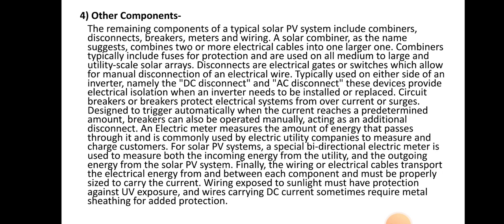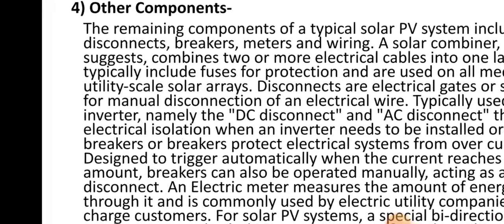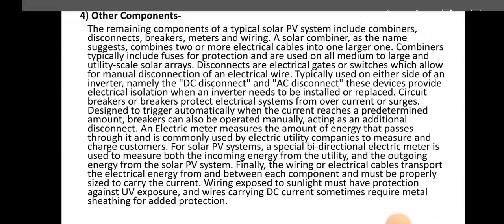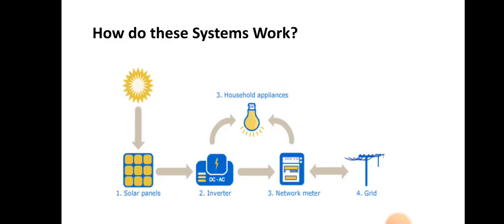Other components are also part of the photovoltaic system, including batteries. As shown in the figure, the extra components include: solar panel, inverter, network meter, electric meter, grid, distribution lines, batteries, and safety switches. All these components work together for the efficient operation of the photovoltaic system. I think all of you understand how the photovoltaic system works and what its components are. We will continue with the next point in the next lecture, so please watch the next lecture.